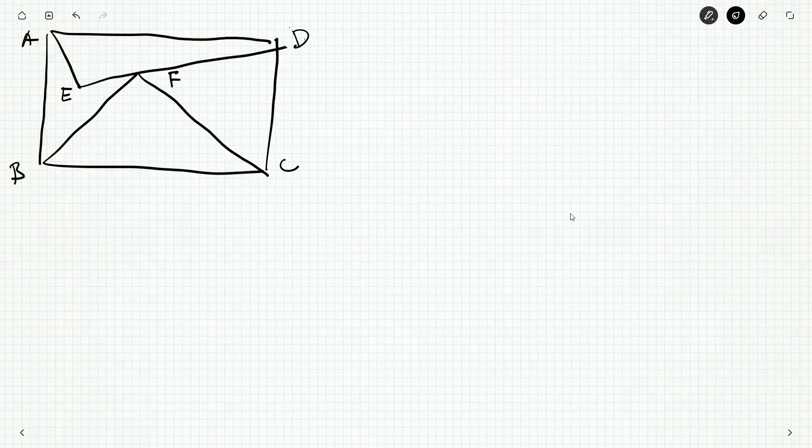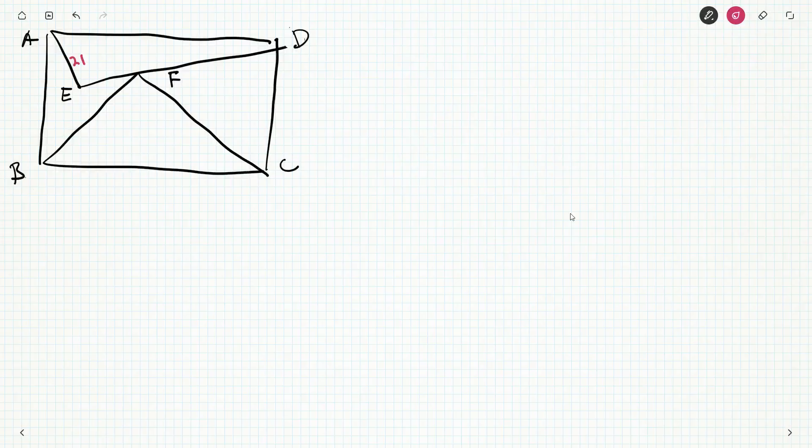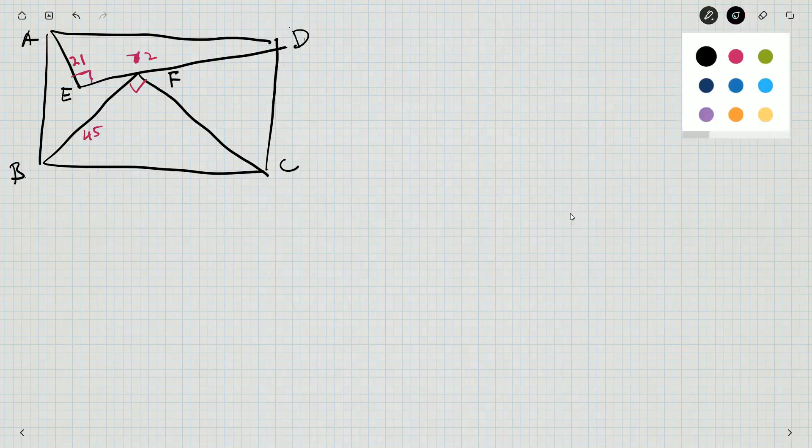Let's get out our colors. We've got 21 here, 72 for this whole thing, 45 here, and that's about it. We've got some right angles, and we have more right angles with the rectangle, but let's not add them in until we actually need to do something with them.